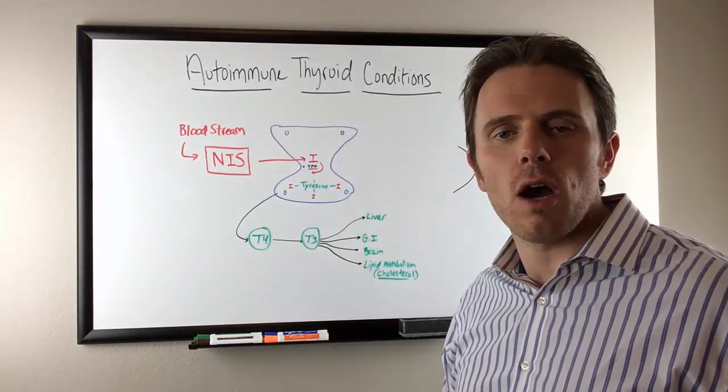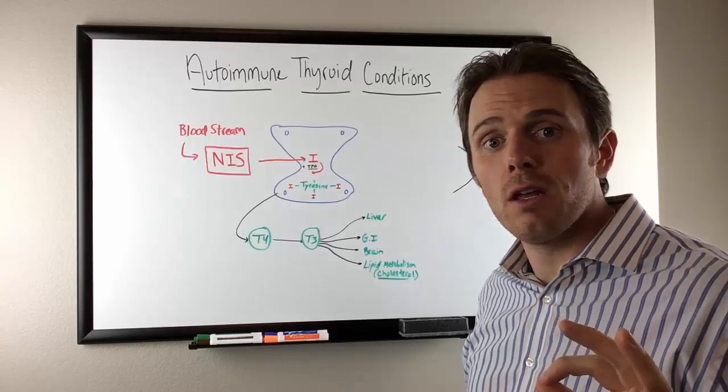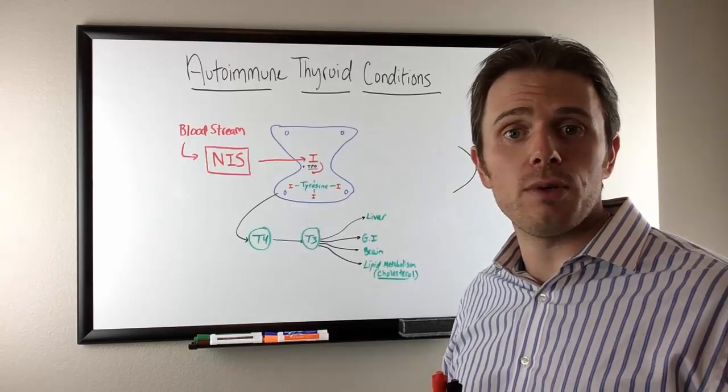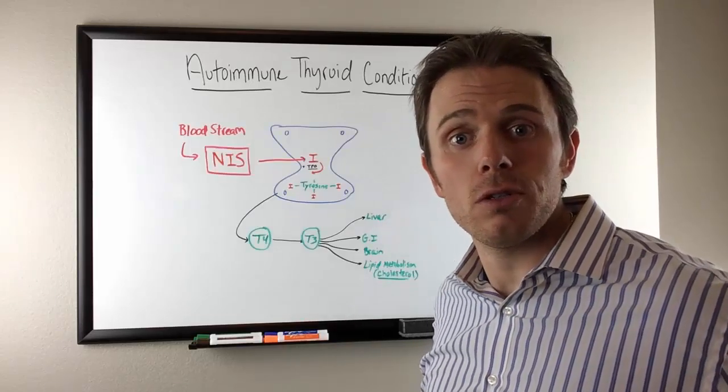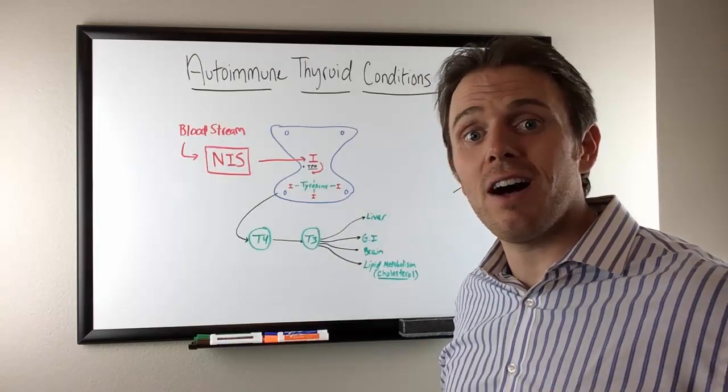What's happening with autoimmune thyroid conditions? Do you know that the majority of thyroid cases, between 50 to 90 percent according to the research, are because of Hashimoto's? Over 20 million Americans have Hashimoto's.